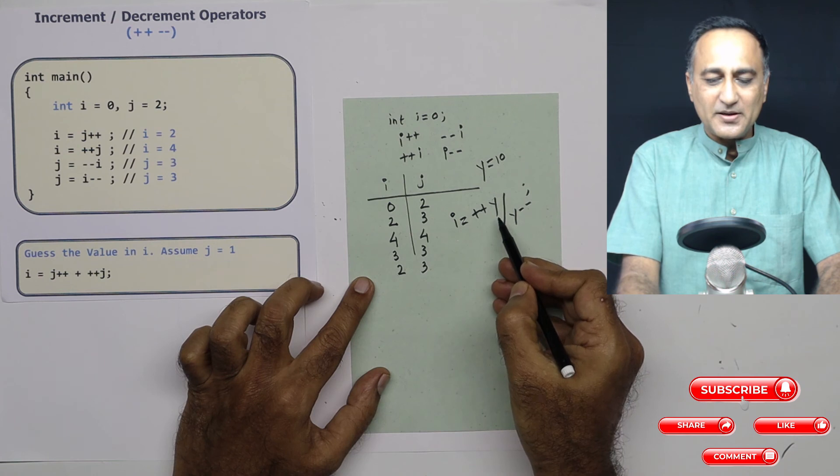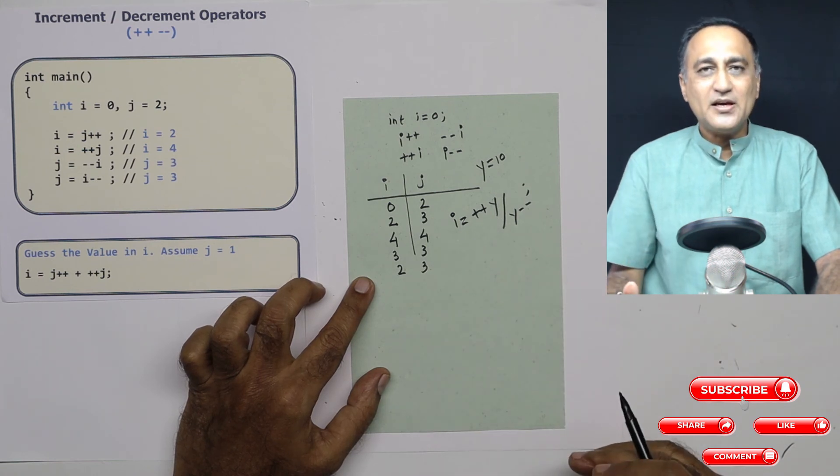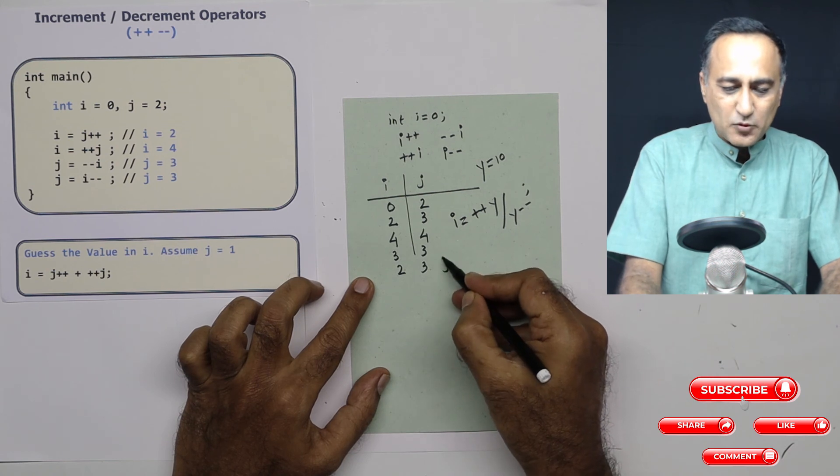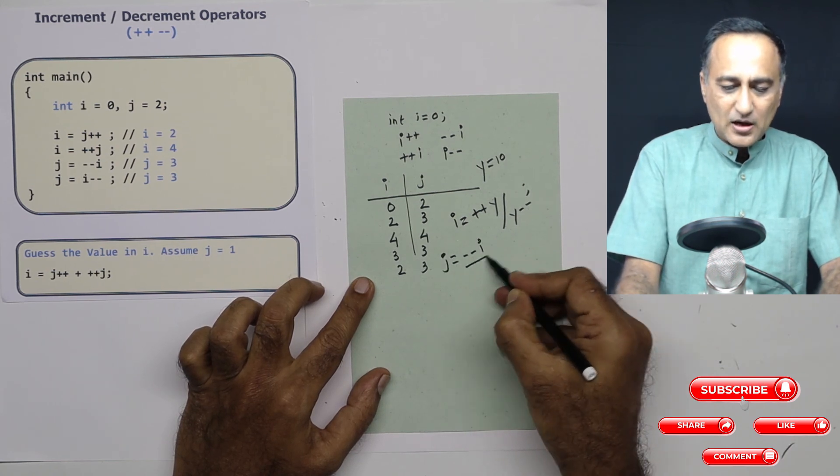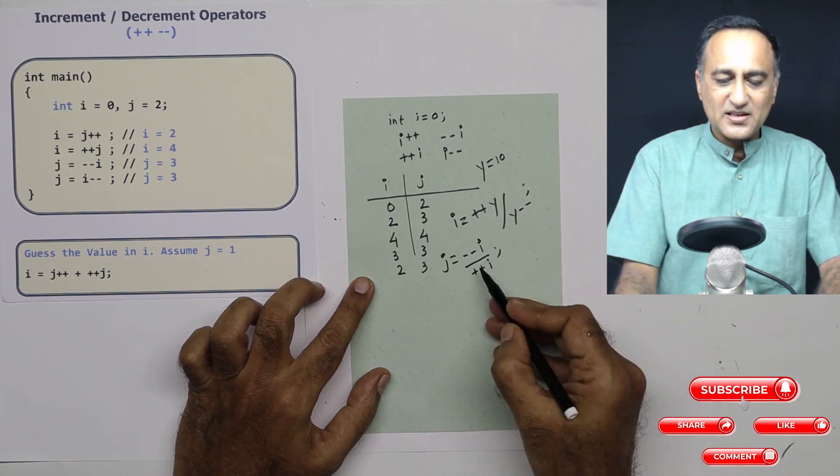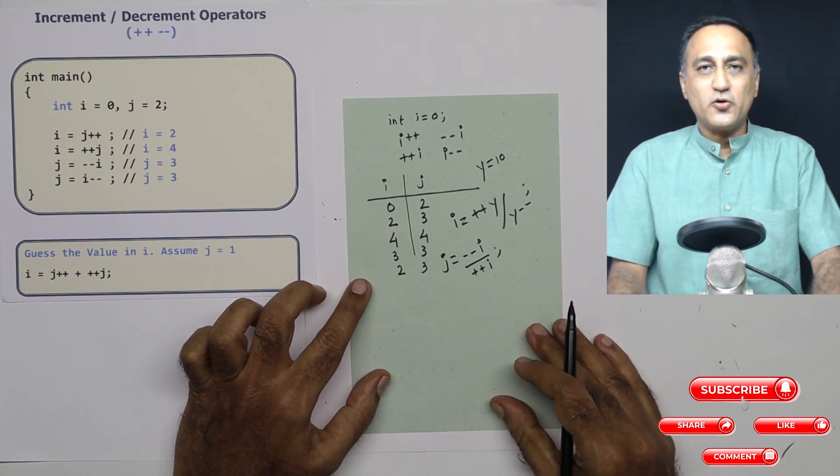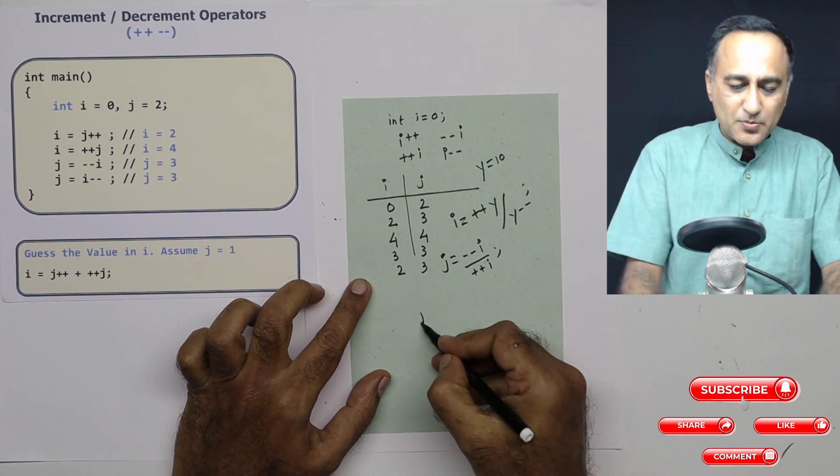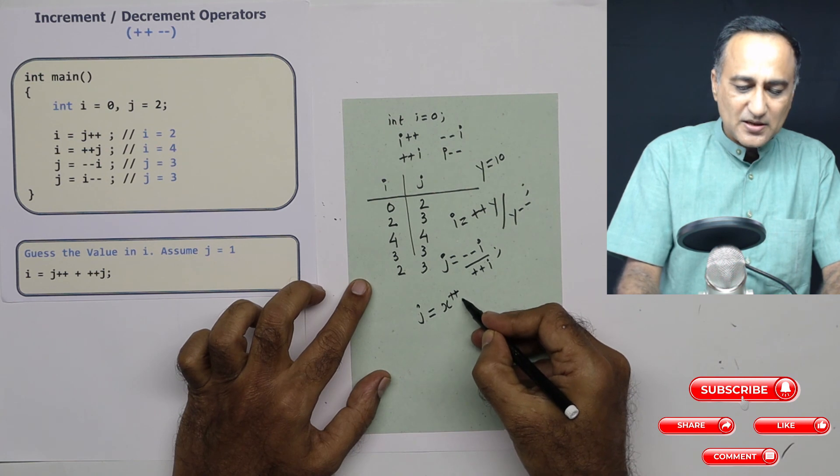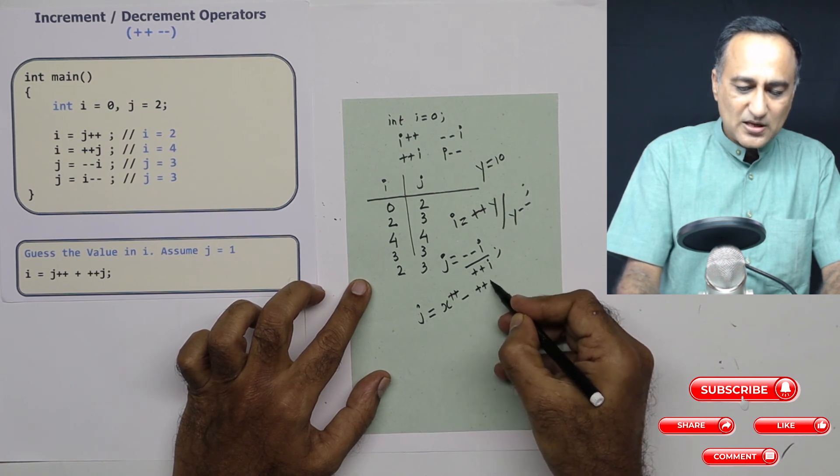Because it's compiler-dependent, the value of i will differ from compiler to compiler. One more example: suppose I say j equals --i / ++i. This is another classic example where the result is not defined. But suppose I say j is assigned x++ - ++i.